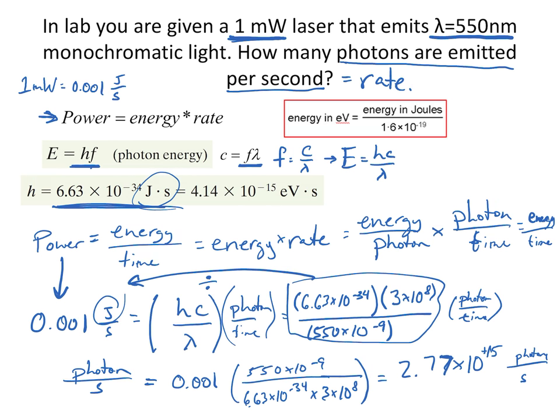One milliwatt laser is about the strength of a laser pointer, and you're getting 10¹⁵ photons per second. That's a lot of photons, and that's why you don't see single photons — there are so many that it looks basically like a continuous beam.